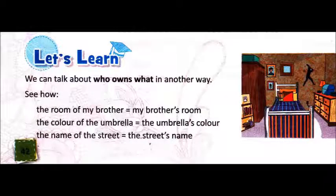Okay children, there are two ways in which you can write the sentence to show who owns what. See the examples below — the two ways are written. The first way: 'The room of my brother.' The second way: 'My brother's room.' In the first sentence, apostrophe S is not used; instead 'of' is used. In the second sentence, 'of' is removed and apostrophe S is added to 'brother'. So, to show ownership we can write sentences in two ways: A — by adding apostrophe S, and B — by using 'of'.